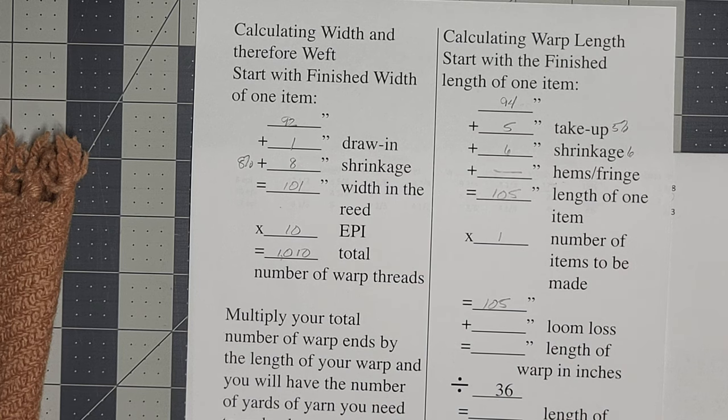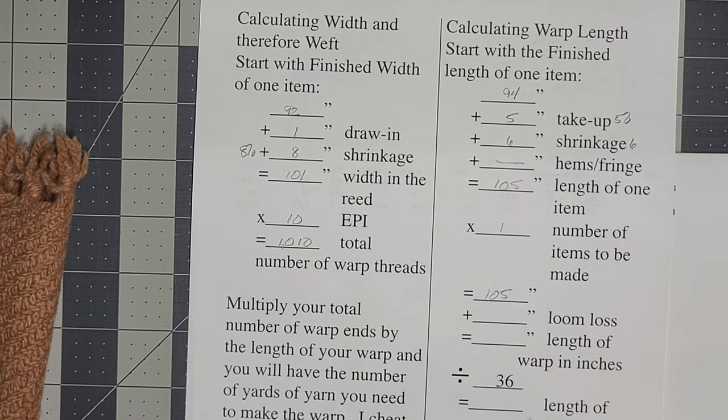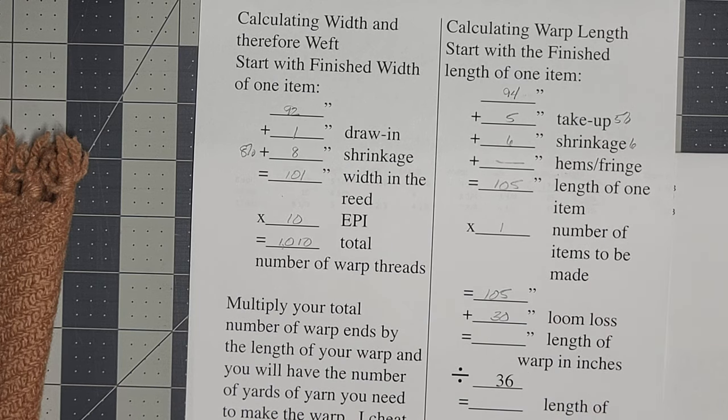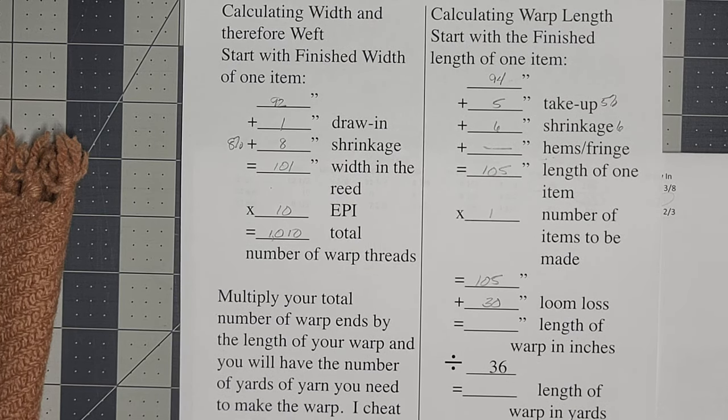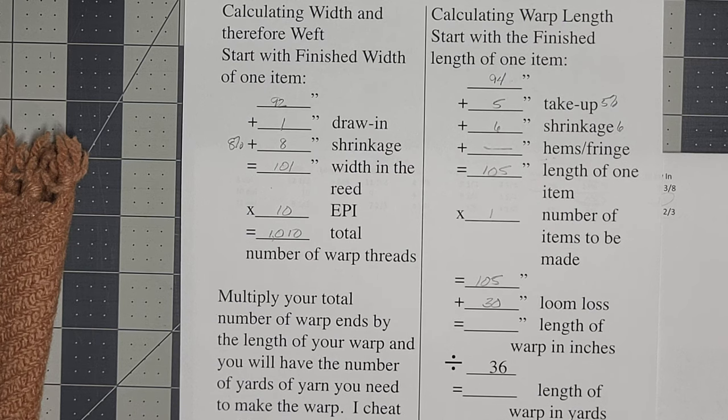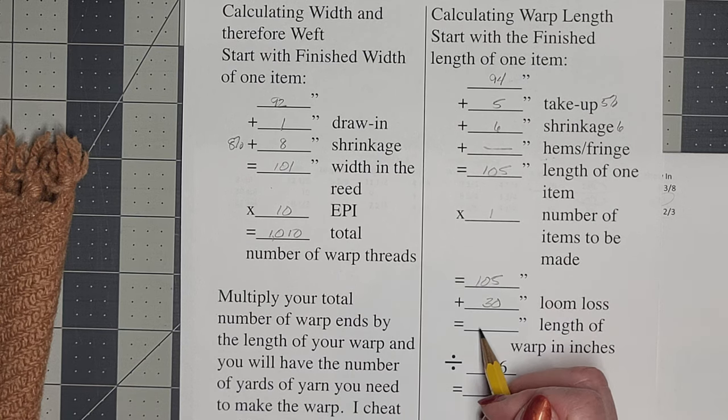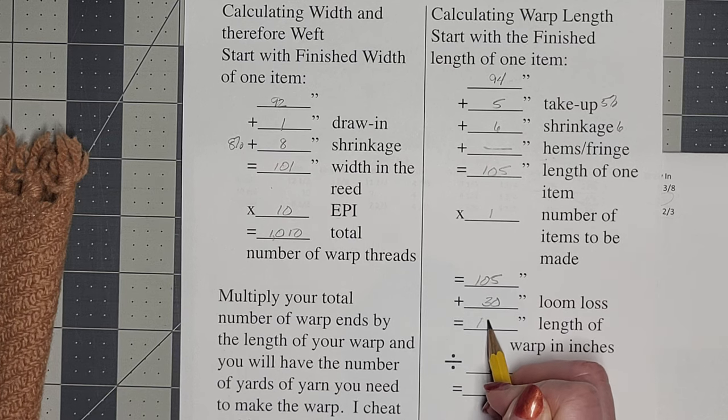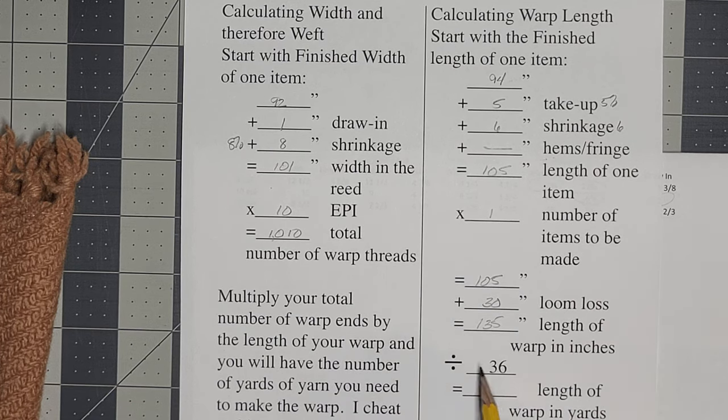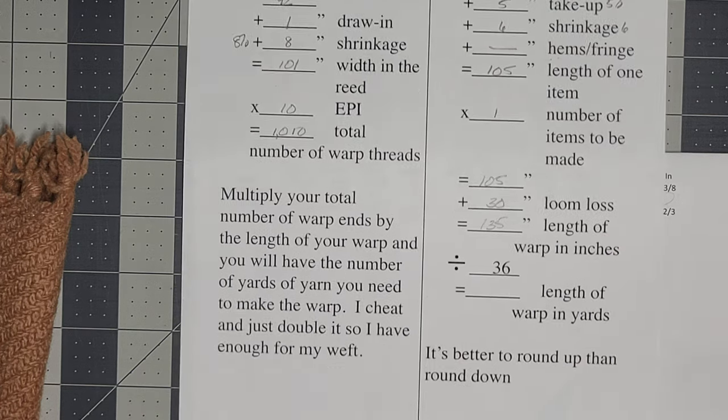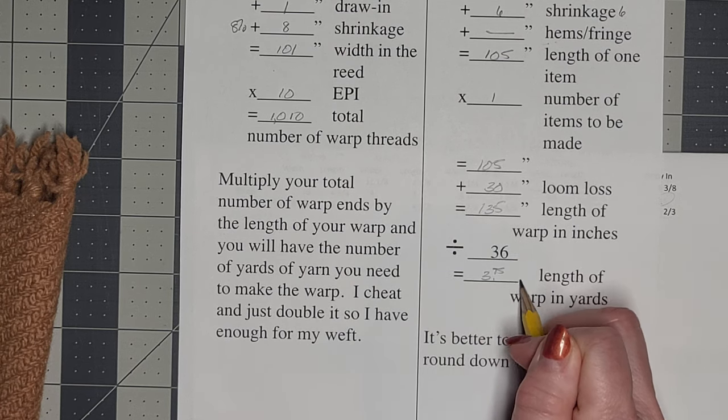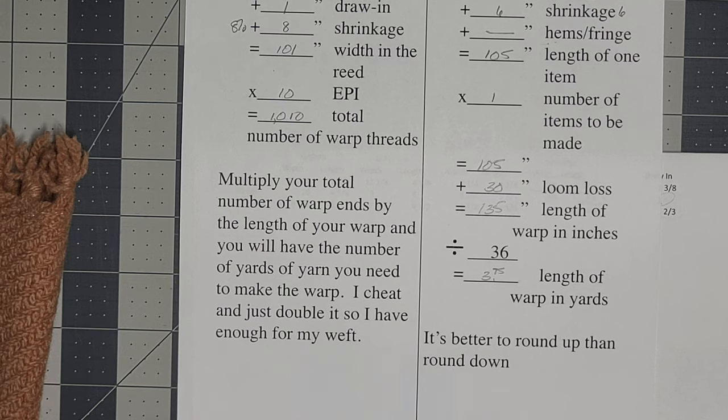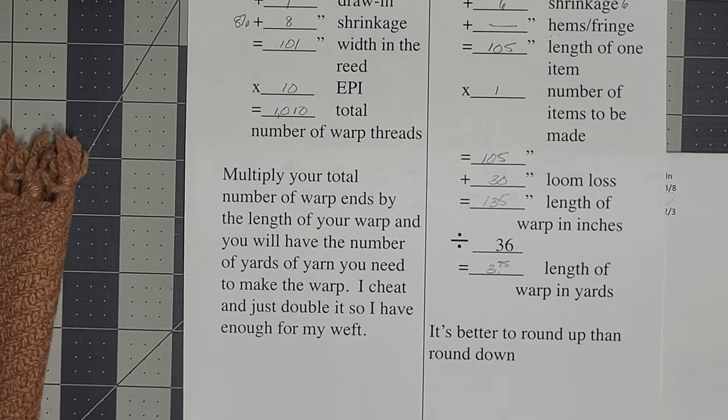We have 105 inches for total length plus my loom loss. I'm going to use 30 inches. That is really, my loom is normally around 20 inches but I don't want to be fighting with the last 10 inches. So the length of my warp is going to be 135 inches. I'm going to divide that by 36 because there's 36 inches in a yard and I'm going to come up with 3.75 yards.